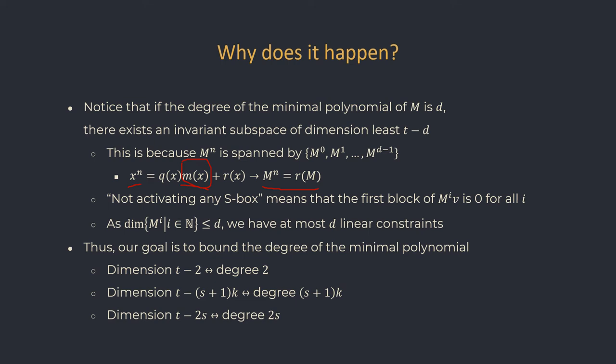Recalling the three theorems: the first claims dimension at least T minus 2, so we need to upper bound the degree of the minimal polynomial by 2. The second claims dimension at least T minus (s+1)k, meaning we need to upper bound the degree by (s+1)k. The third claims dimension at least T minus 2s, so we need to show the degree is at most 2s. To prove these results, we study a class of matrices which we name special matrices.